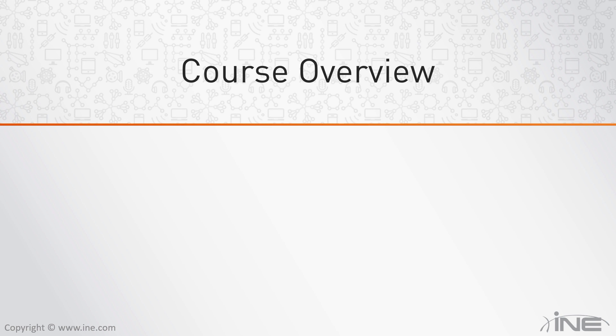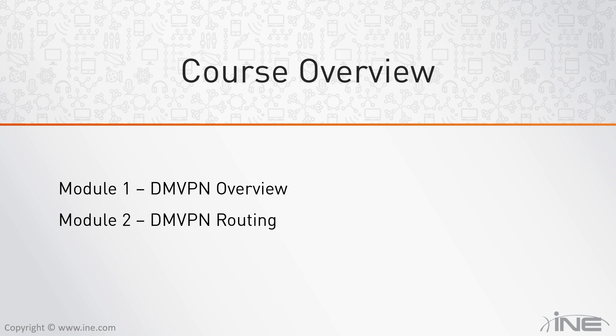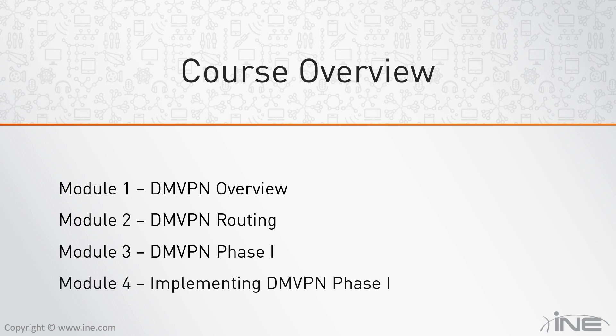We will now take a look at an overview of this course. There are going to be 12 different modules. In the first session, we will take a look at DMVPN from a high-level perspective — what DMVPN is — and we will look at different DMVPN components in the data and control plane. In the next session, we will spend some time looking at the different routing options for DMVPN, and then we will start talking about individual DMVPN phases and their implementation.